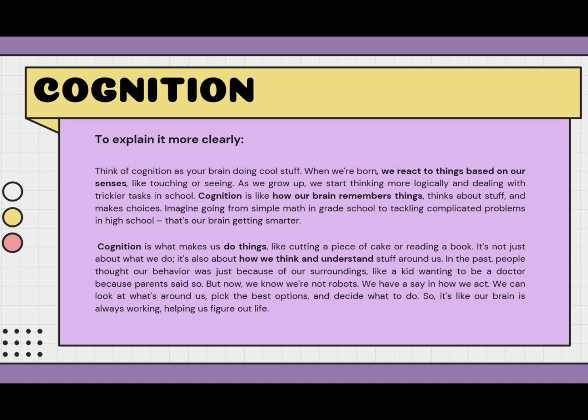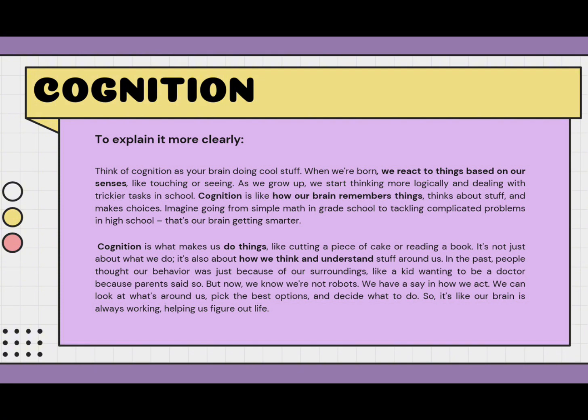In the past, people thought our behavior was just because of our surroundings — like a kid wanting to be a doctor because their parents said so. But now we know we are not robots; we have a say in how we act. We can look at what is around us, pick the best options, and decide what to do. Our brain is always working, helping us figure out life.